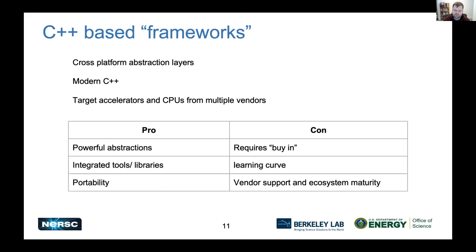Moving along the landscape to C++ frameworks: these are typically built as cross-platform abstraction layers. They give you a set of modern C++ abstractions and primitives that you can compose to express your application, and they tend to target accelerators and CPUs from multiple vendors. As a pro, these come with very powerful high-level abstractions and usually have integrated tools and libraries, and you can also get very high performance.